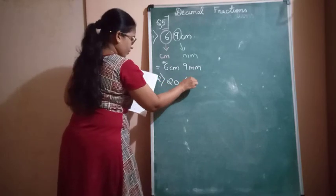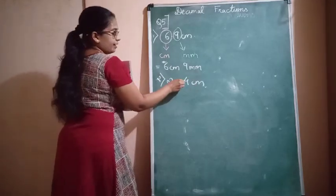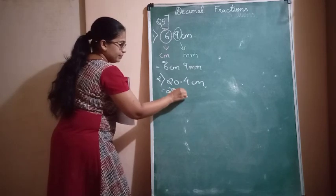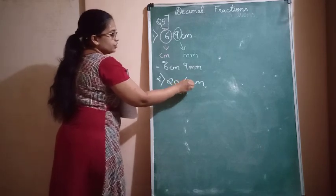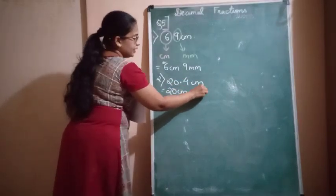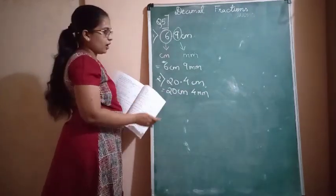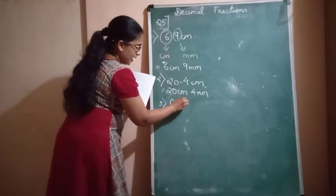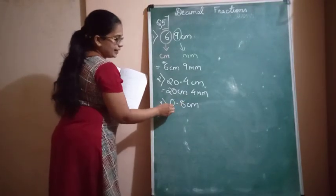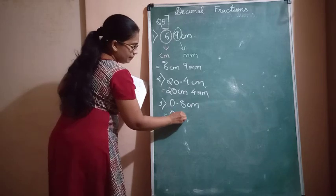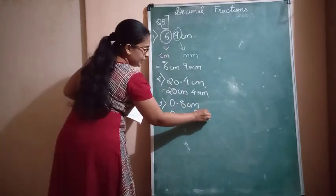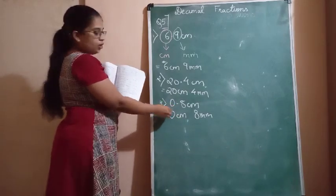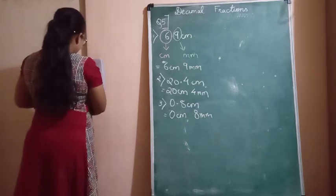20.4 centimeters: the number before the decimal is 20 centimeters and the portion after the decimal is 4 millimeters. For 0.8 centimeters, you can write it as 0 centimeters and 8 millimeters — but since the centimeter value is 0, you can directly write it as 8 millimeters.